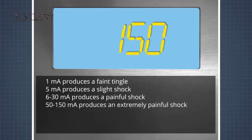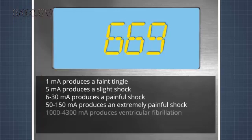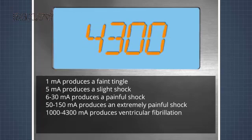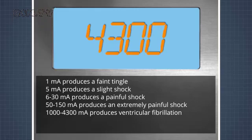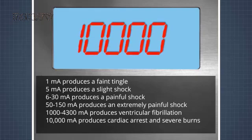Fifty to 150 milliamps produces an extremely painful shock. At this level breathing stops and severe muscle contractions occur — death is possible. One thousand to forty-three hundred milliamps produces ventricular fibrillation, meaning the heart is twitching and not pumping blood through the body. Nerve damage occurs and death is likely. Ten thousand milliamps or 10 amps produces cardiac arrest and severe burns; at this level death is probable.